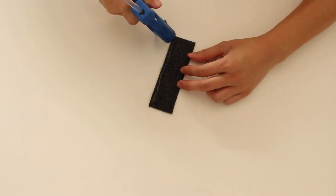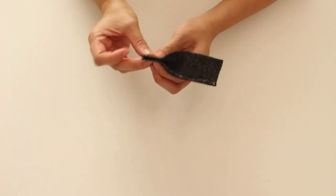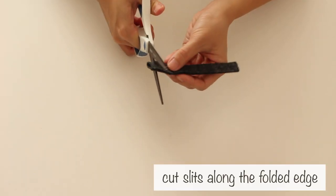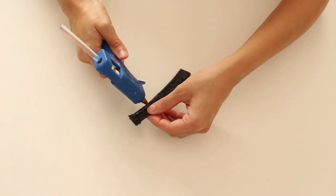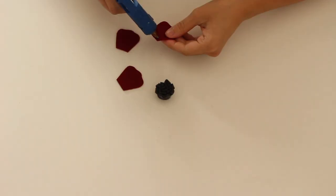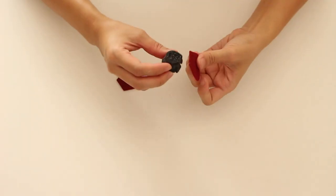Glue and fold the longer side of the felt strip. Then, cut slits along the folded edge. Glue and roll the strip. Glue the petals around it from small to large.